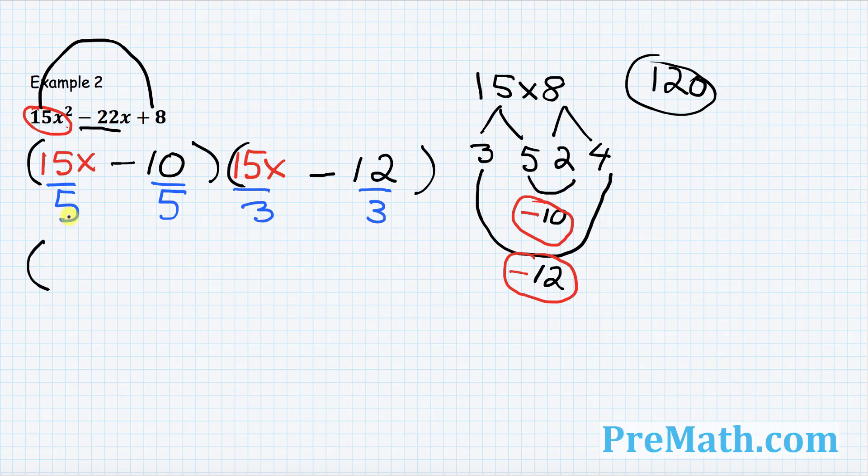Let's go ahead and simplify this thing. What are we going to get? 5 goes into 15, 3. So we got a 3x minus 5 goes into 10 twice times another parentheses. This becomes simply 5x minus 4. And that's it. Piece of cake. These are our factors for our example number 2. And that is our final answer.